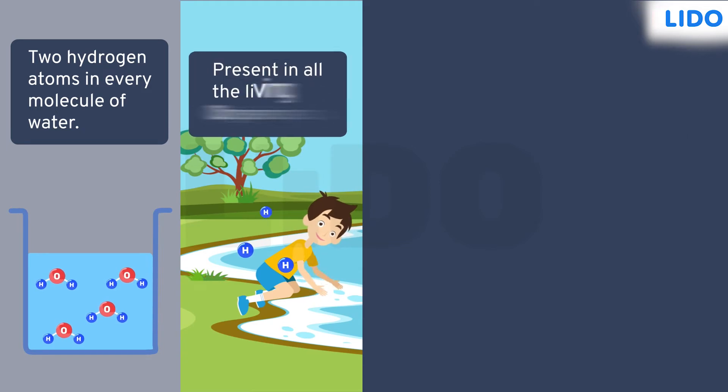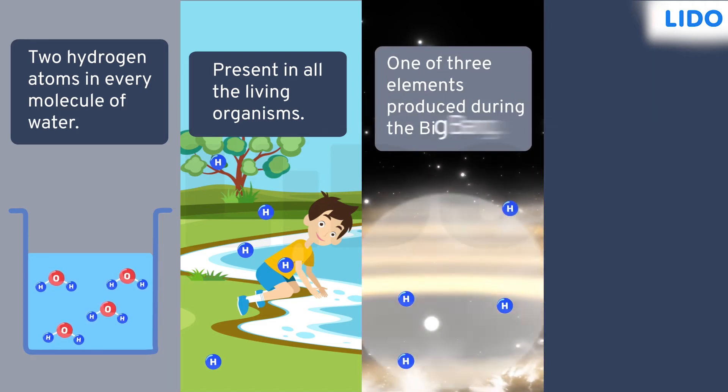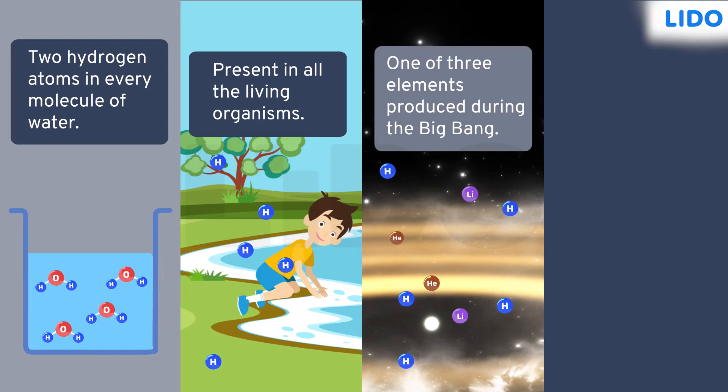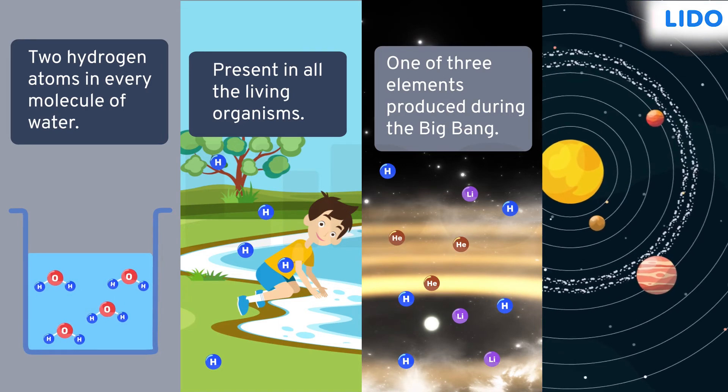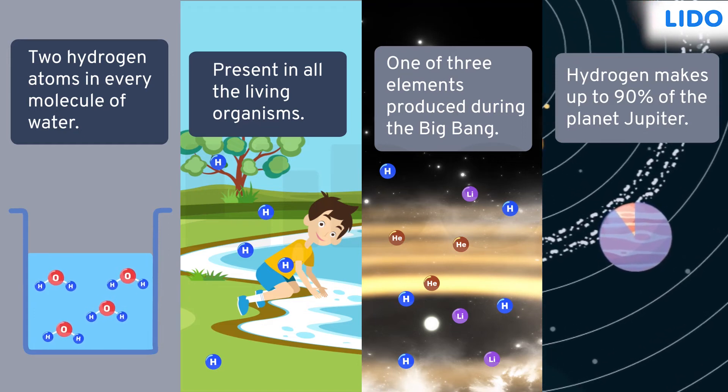It is nearly present in all living organisms as well. Hydrogen is believed to be one of three elements produced during the Big Bang. The others are helium and lithium. Additionally, hydrogen makes up to 90% of the planet Jupiter.